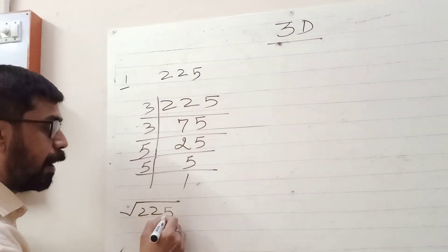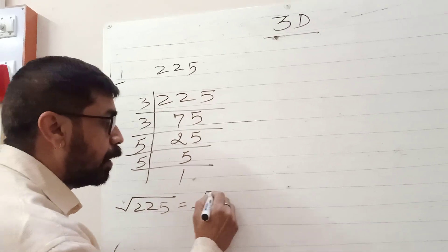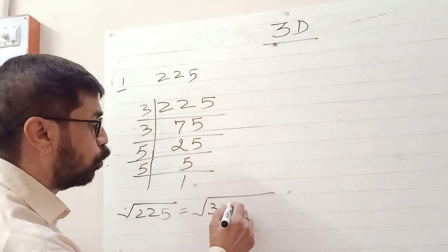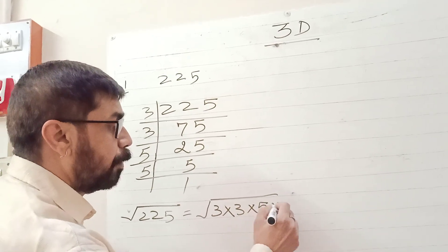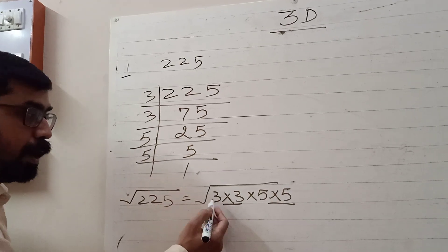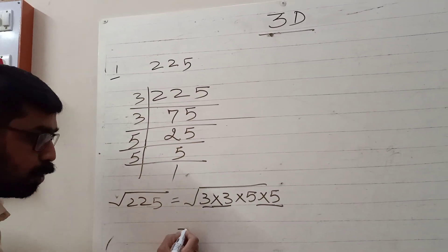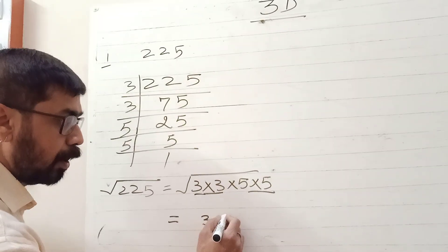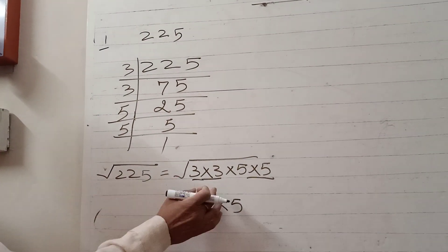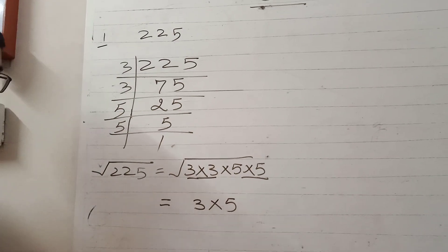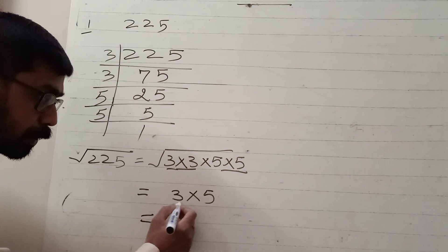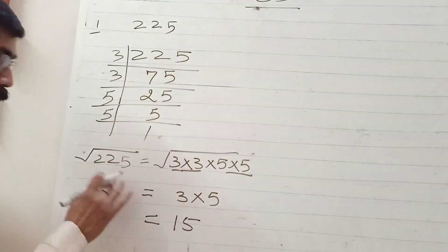Square root of 225 equals its factors. We will make pairs of these. Out of these pairs, only a single factor we will take out: 3 times 5. We have taken out only one from each pair, and this root sign we will remove. This is 3 times 5, which equals 15. So root 225 equals 15.